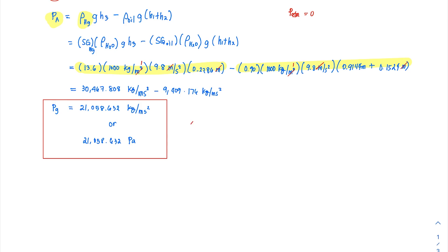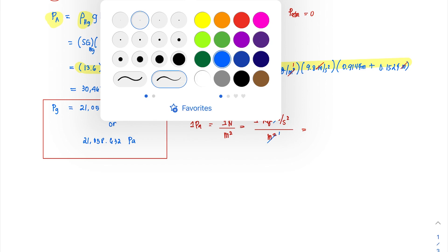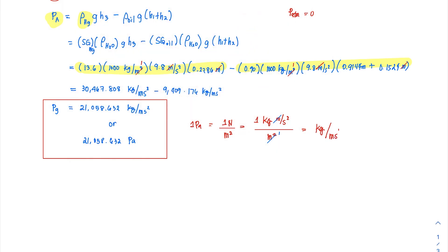To explain why kg/(m·s²) equals pascal: one pascal equals one newton per square meter, and one newton is the force required to accelerate one kilogram at one meter per second squared. So N/m² = kg·m/s² / m² = kg/(m·s²). This confirms that our units are correct and equal to pascals.